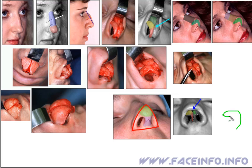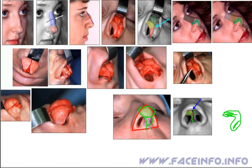Each cartilage has the shape of a hook with two stalks: the external and the internal. The tip of the nose is the band between them. The lower stalk forms the columella — this small column.